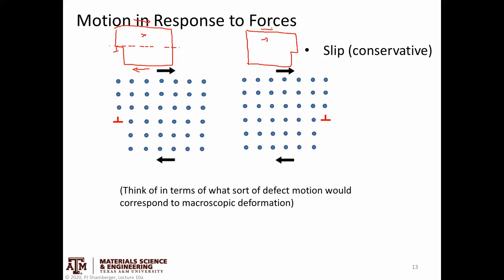That makes sense given the shear stress applied. The extra half plane — that lip — is now on the right-hand side of the crystal. For that to have happened, the dislocation had to move from left to right.